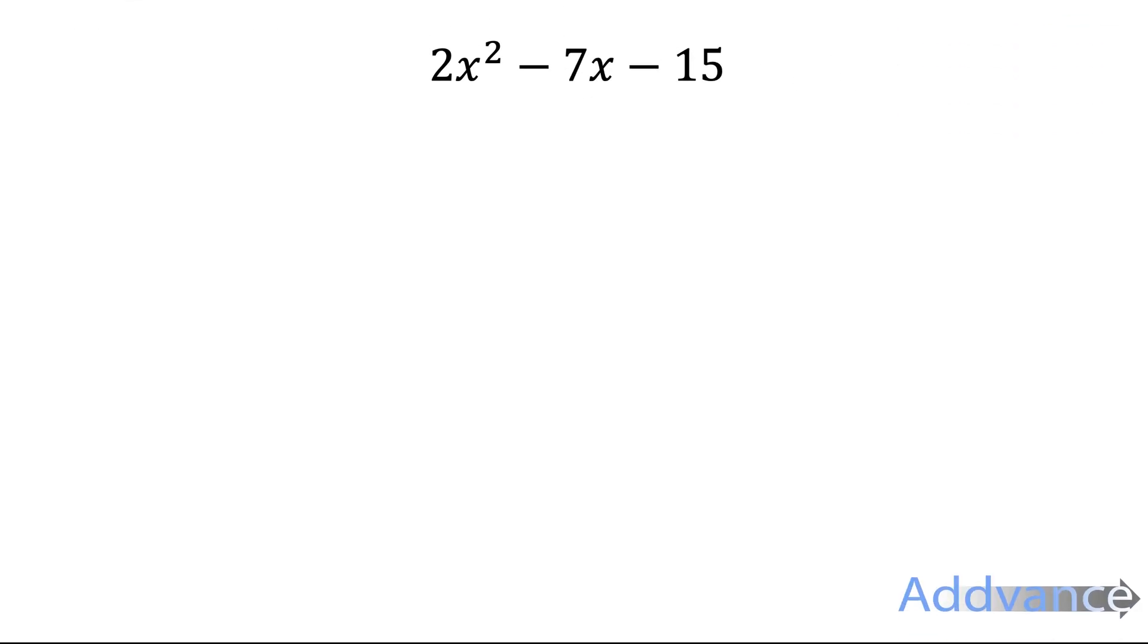So if you're ready we can try factorising this quadratic and this one is harder than normal quadratics because the number in front of the x squared is not 1. Here it's 2. 2x squared minus 7x minus 15. So any time you have a number here in front of the x squared it makes it more complicated.